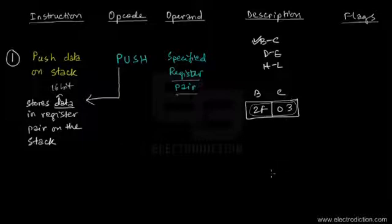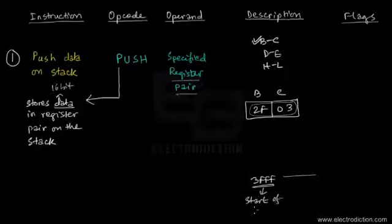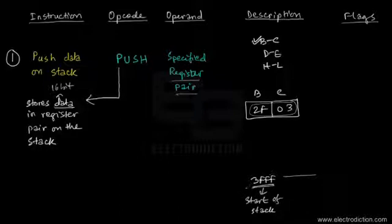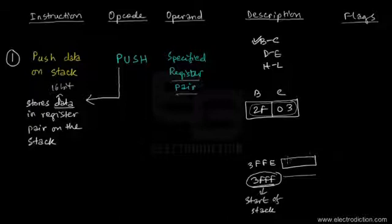Let's also assume that the stack has been declared at memory location A3FFH — this is the start of the stack memory. Whenever we want to store data, the storage begins at a memory location that is one less than the start of the stack memory. So the memory location 3FFEH would actually be the first location where the data bytes get stored.